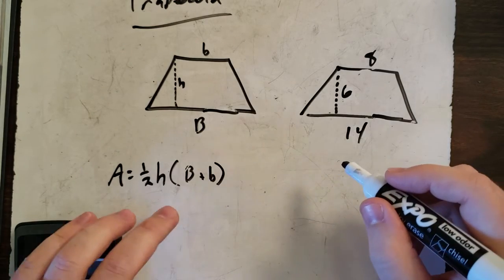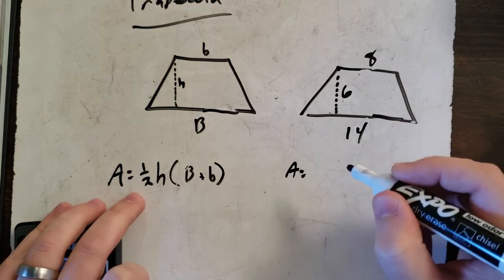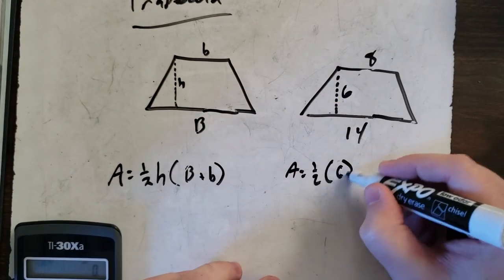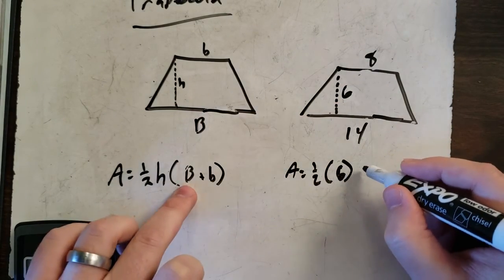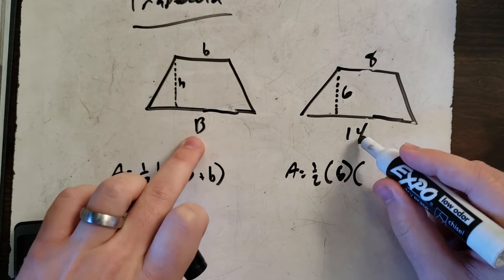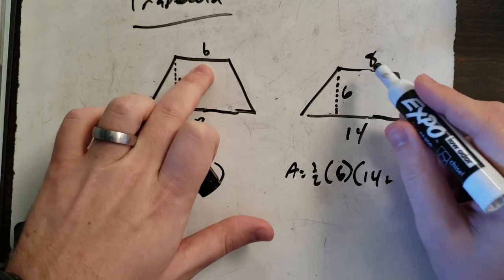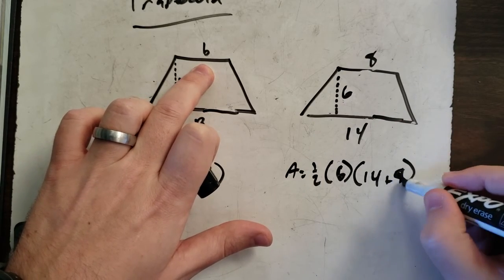So same thing. A equals one-half times h. What's our h? Six times our big B, which is 14, plus little b, which is eight.